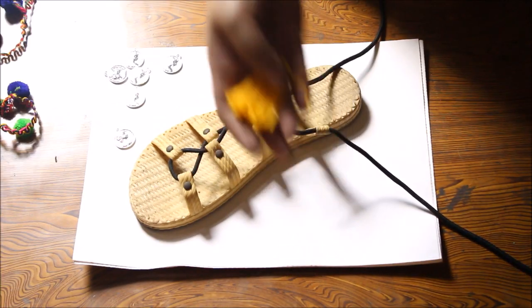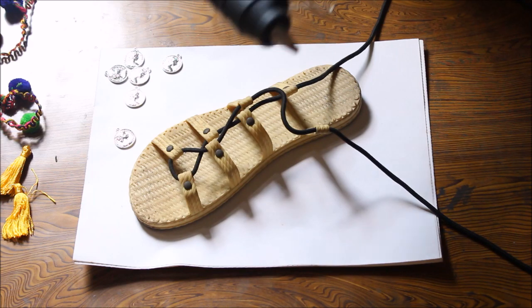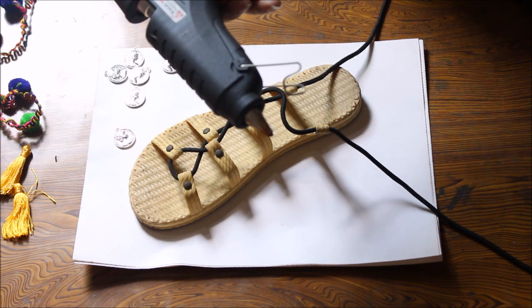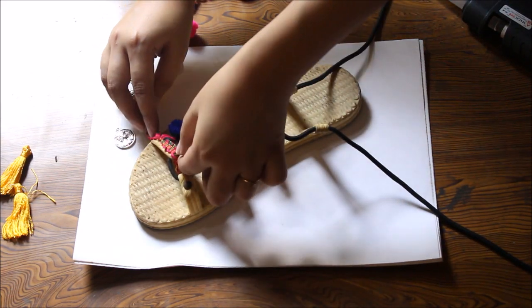For tassels in a color of your choice, I have a video on how to make tassels I will link it in the description box, and a few jump rings. You will also need some hot glue or any other strong glue.